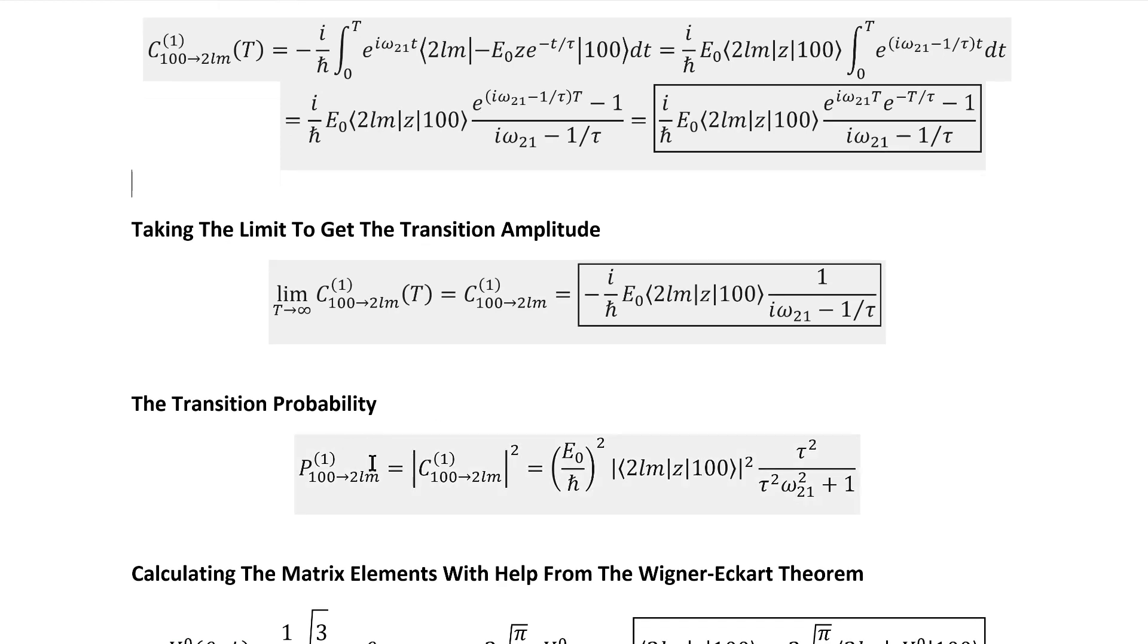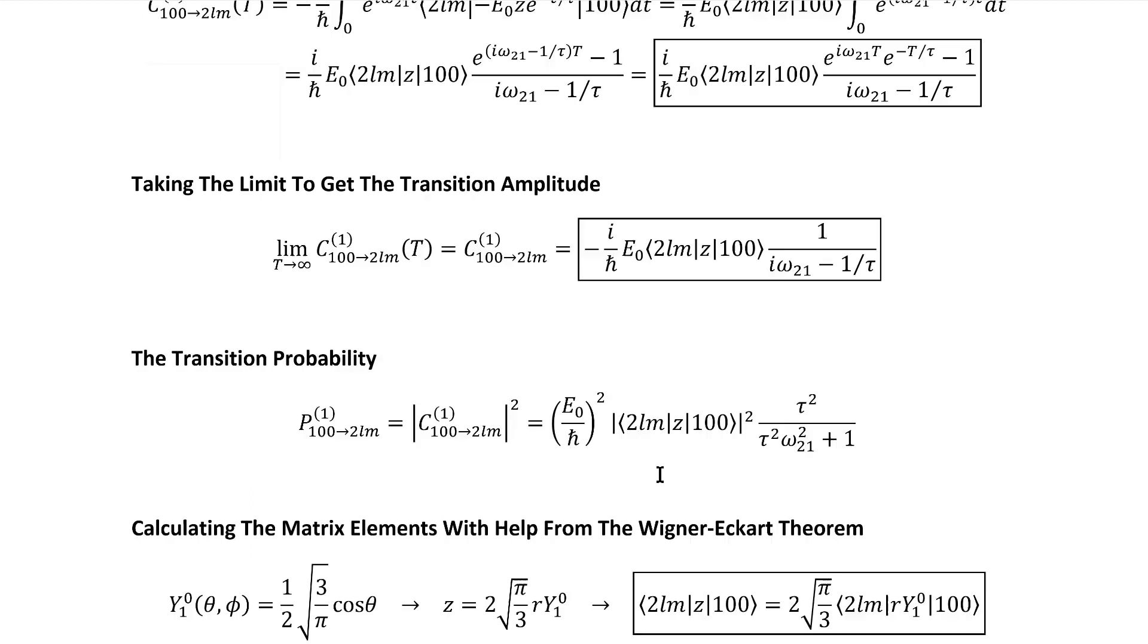It's the probability that we're interested in, and that makes it useful to evaluate the absolute square for the general case before we even bother to evaluate these matrix elements. That completely finishes up handling the time part, and reduces the problem purely to evaluating this set of four matrix elements.